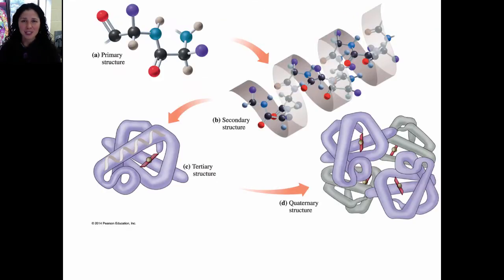This is a figure from your textbook that shows four different levels of protein structure. The primary structure is a sequence of amino acids. The secondary structure is the shape that the amino acids form. Tertiary structure is the overall shape of the entire protein. And quaternary structure is characterized by multiple protein chains coming together to make a new, larger structure.